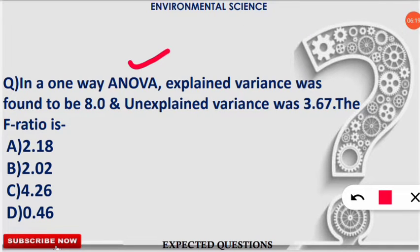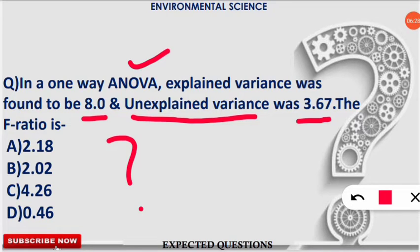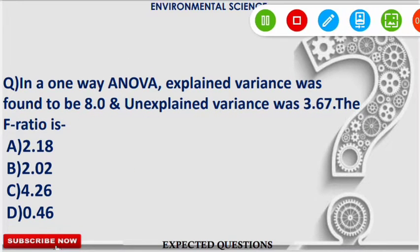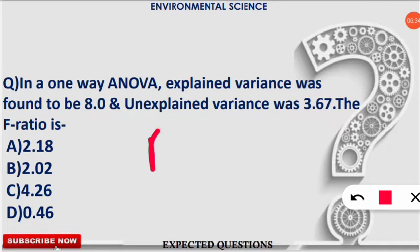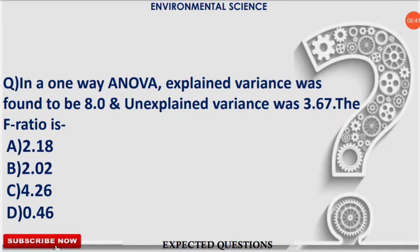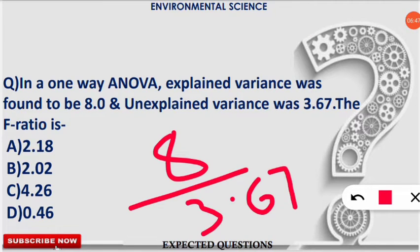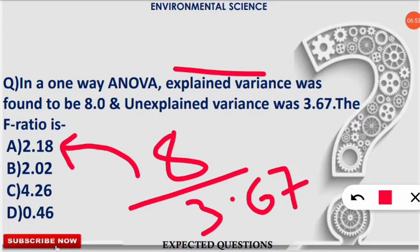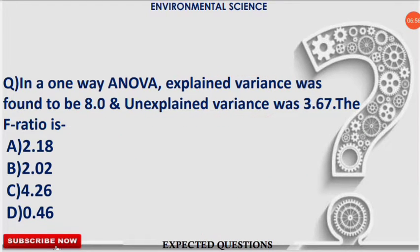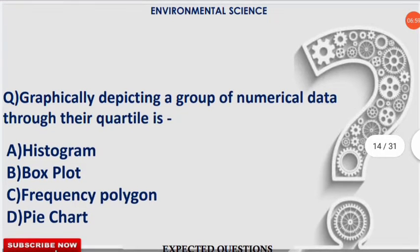The next question: in a one-way ANOVA, the explained variance is 8 and the unexplained variance is 3.67. Find the F-ratio. The formula is simply: F-ratio = explained variance ÷ unexplained variance. So 8 ÷ 3.67 = 2.18. Remember: F-ratio = explained variance divided by unexplained variance.